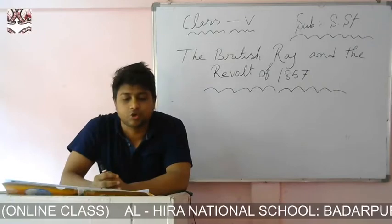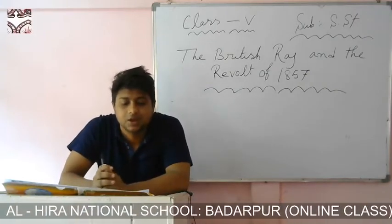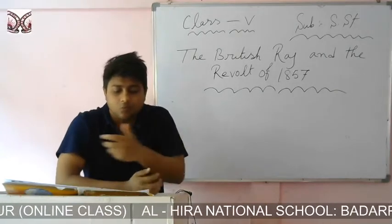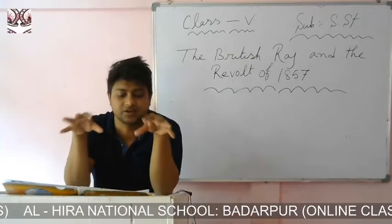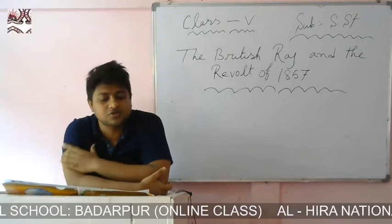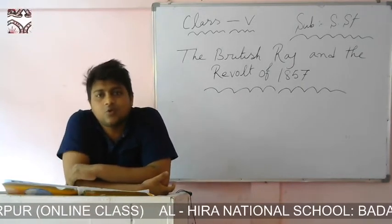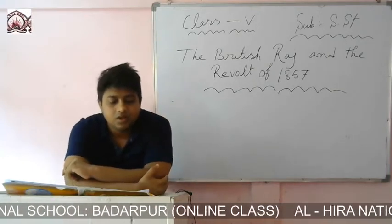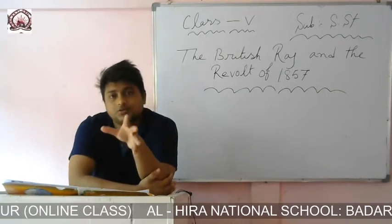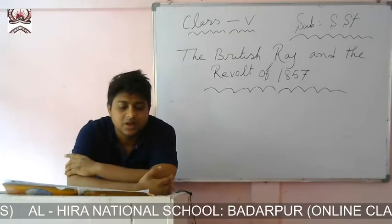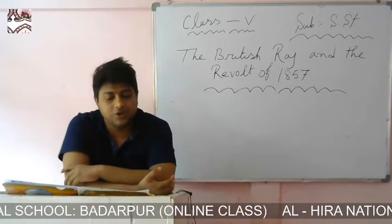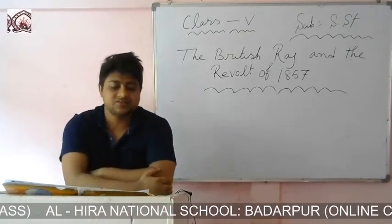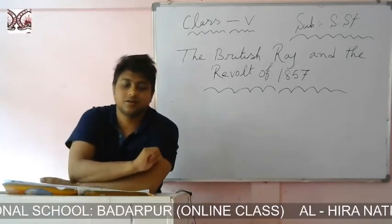Though the company was interested in earning profit through trade, it found it necessary to establish permanent centers with large go-downs to store the goods. In those days, go-downs were called factories. The company established its first factory at Surat on the west coast of India in 1608.